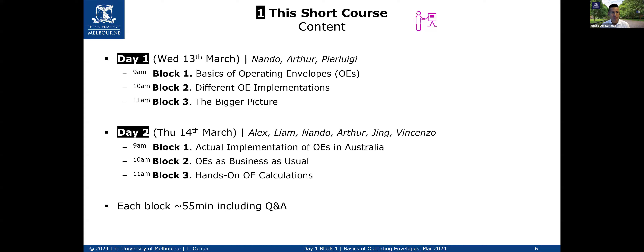To do a quick recap: today we'll go through the basics in this hour, then move to different operating implementations. As much as we would like to do something very accurate, distribution companies are unlikely to be able to build electrical models, particularly of their low voltage networks — the poles and wires connecting our homes and businesses. So they will need to come up with something else. We will discuss these potential implementations and the implications of losing accuracy.